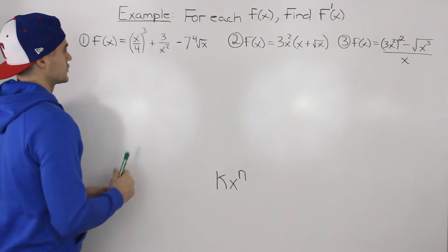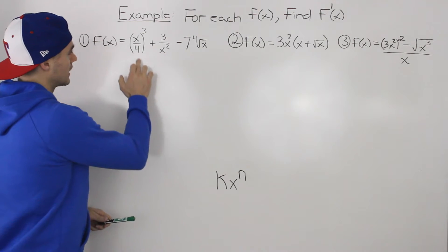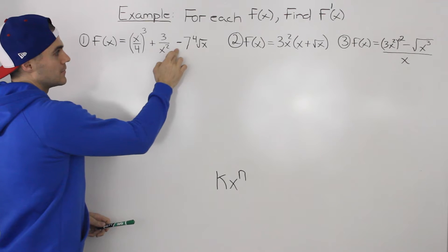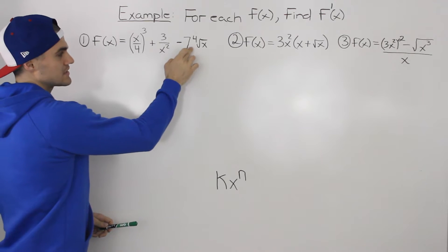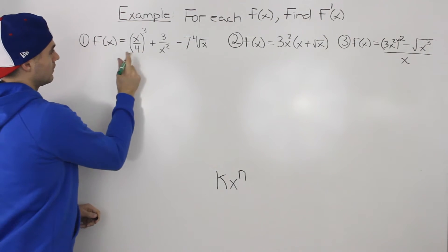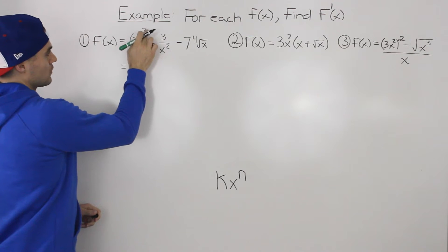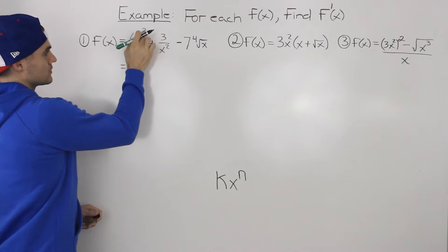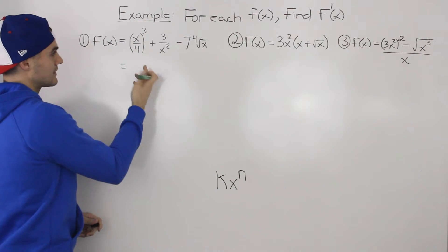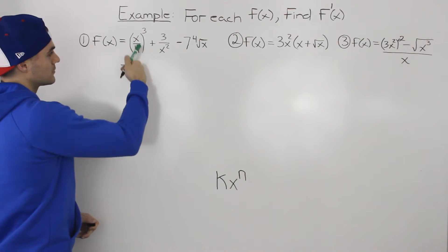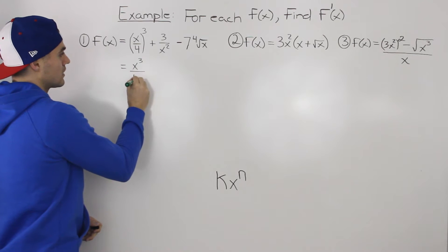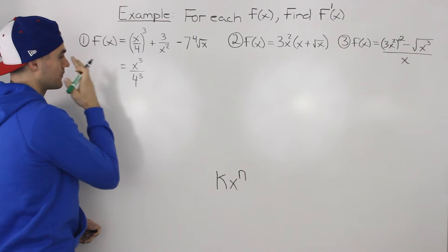Let's start with the first function: (x/4)³ + 3/x² - 7 times the 4th root of x. For the first part, whenever you have a bracket with an exponent outside, distribute the exponent inside if possible. So we'd have x to the power of 3 over 4 to the power of 3.